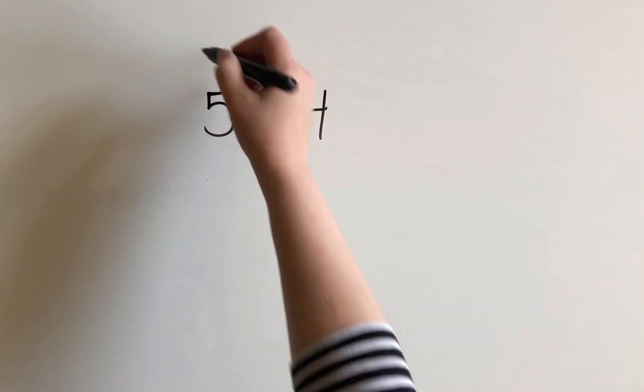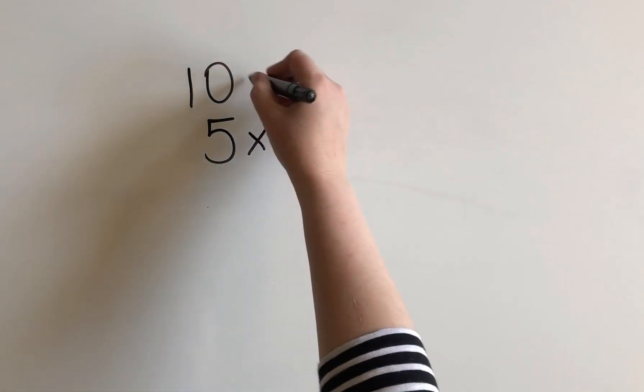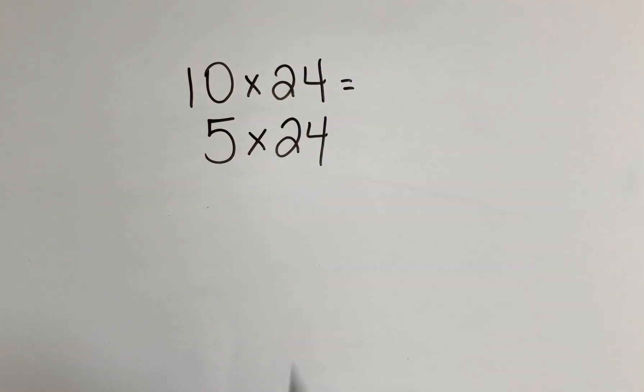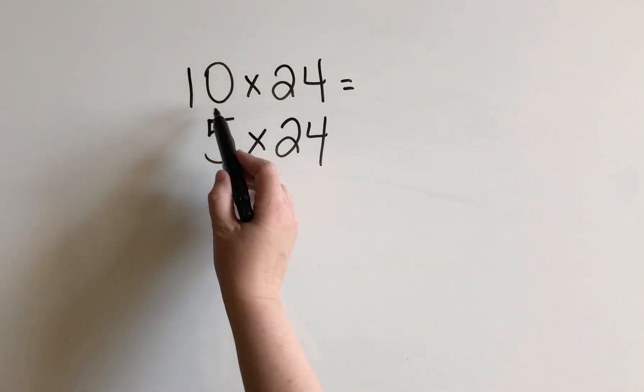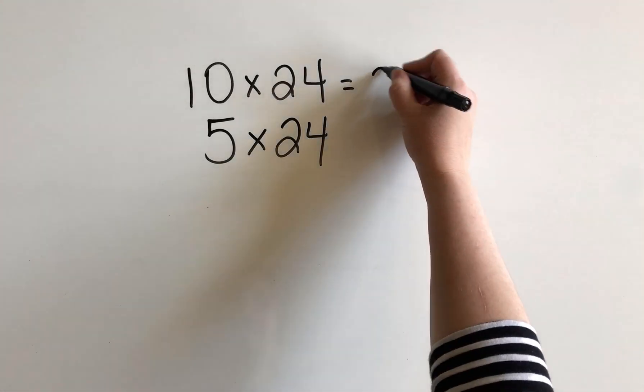Let's start with 10 times 24. Now if you have already learned how to multiply bigger numbers by 10, you'll know that this is 240.